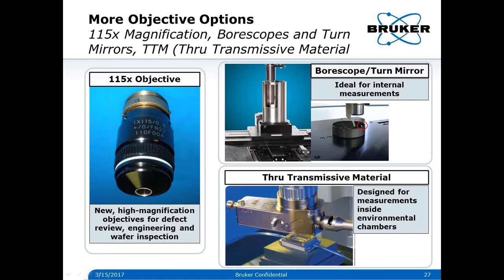On the upper right we have borescopes and turning mirrors. Borescopes are great for getting inside cylinder sleeves and measuring the surface roughness of the sides. We can mount a turning mirror — you can see the light circled in red bouncing off the side of a part — so now you don't have to turn the part vertically to measure inside; we turn the light bouncing off the side of the part to get a surface finish measurement. Below we have our TTM objective, or through-transmissive-material objective, initially developed for environmental chambers. There's a compensation glass in the objective so the signal coming off the part is the same optical path difference through the objective, allowing measurement into the environmental chamber.